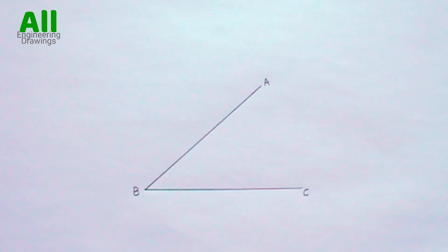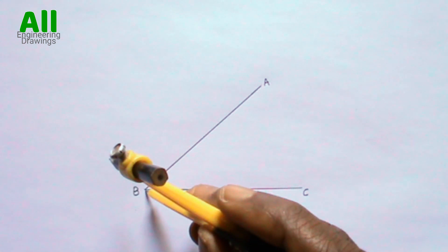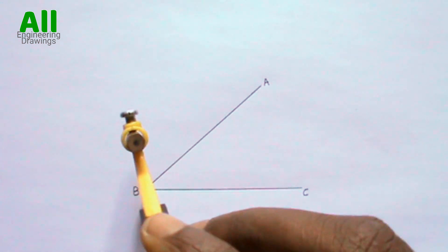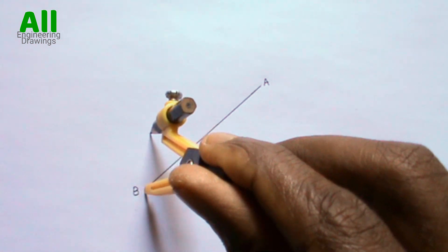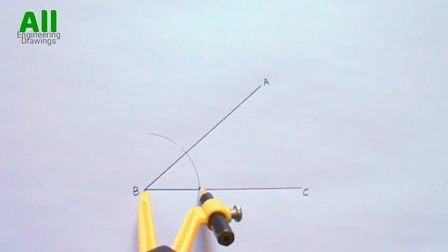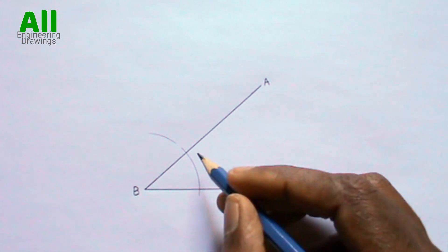After drawing your required angle, now to bisect it, place your compass on point B. Then cut an arc this way. Then cut another arc this way. Label the points where the arcs intersect the lines of your angle.